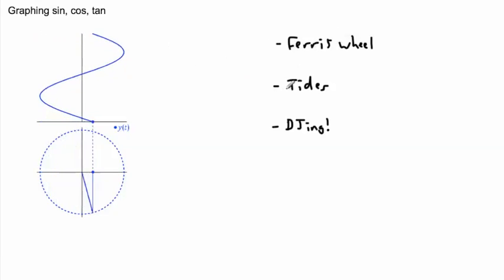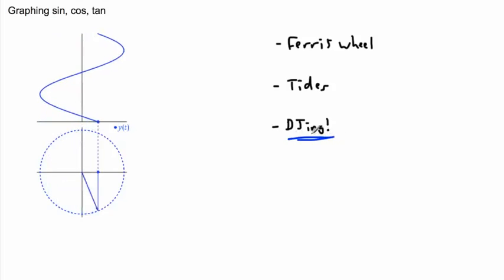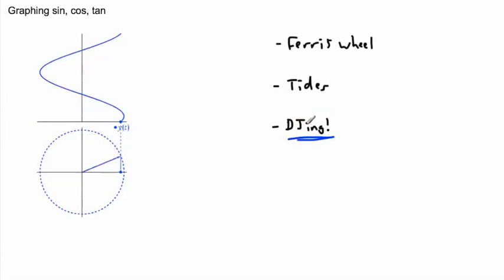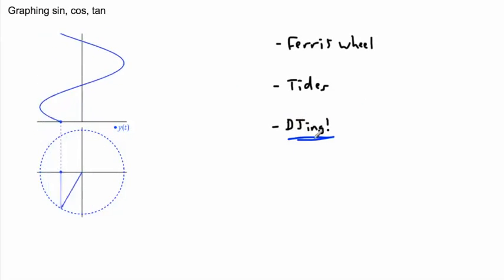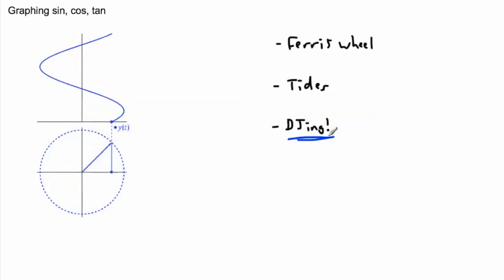We have lots of examples in nature and everyday life where things are sinusoidal: ferris wheels, tides, and even DJing. I'm going to do a little video later showing how I see beat matching for DJing — if you're trying to match one song on top of another and play them at the same time, it helps to understand a little bit about sine and cosine graphs.